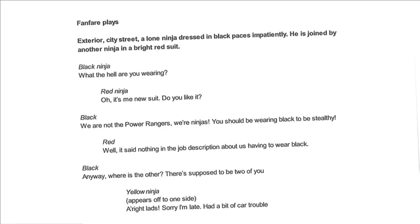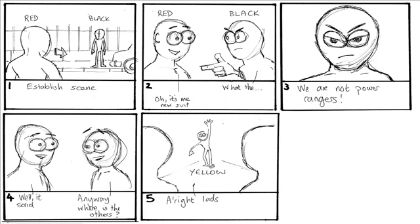The next thing you should do when you're doing an animation - because it's a visual medium - it's always good to have a storyboard. Translate that script into, if you like, a comic of what's going to happen on screen. What's going to happen is that on a city street we're going to have a ninja dressed in black, somebody red turns up, they have a short conversation, and then somebody yellow turns up at the end. Movies only has 4 cameras, so you're only allowed 4 camera shots, and I've designed the script, the story, and the storyboard around those 4 camera angles.